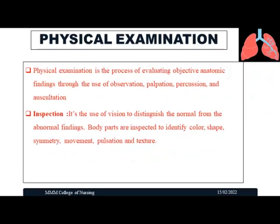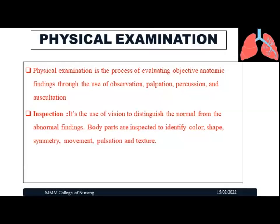Physical examination is the process of evaluating objective anatomical findings through the use of observation, palpation, percussion, and auscultation. Inspection is the use of vision to distinguish normal from abnormal findings. The body parts are inspected to identify color, shape, symmetry, movement or pulsation, and texture. In this method, the sense of vision is used to identify abnormalities present in the chest in relation to the respiratory system.